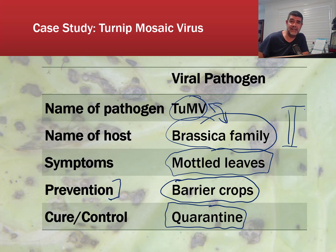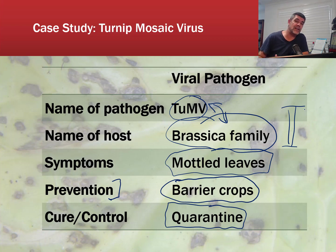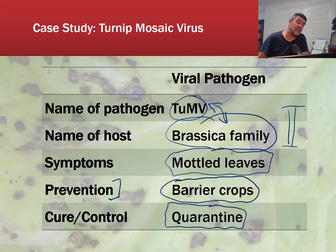That said, the brassica family is one of the most diverse families in terms of the range of different vegetables that we've been able to attain from different parts of the brassica plant species.